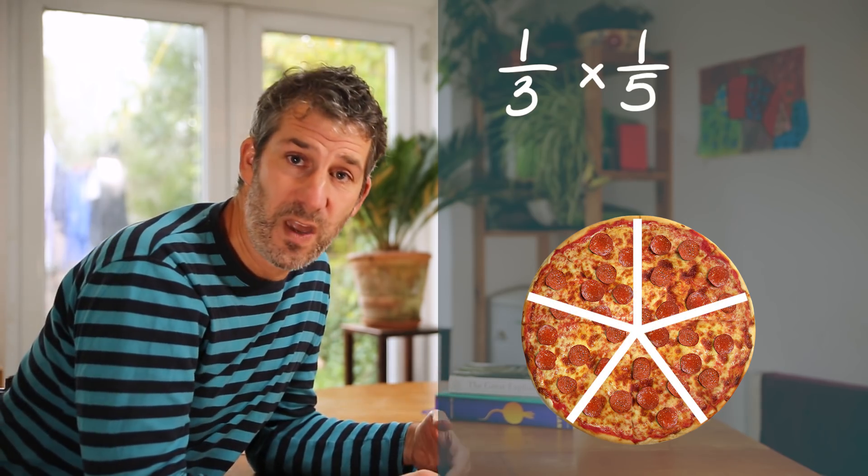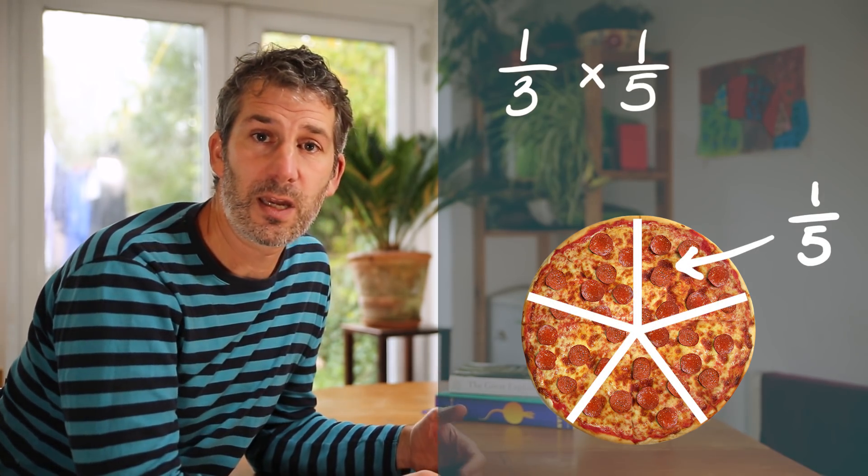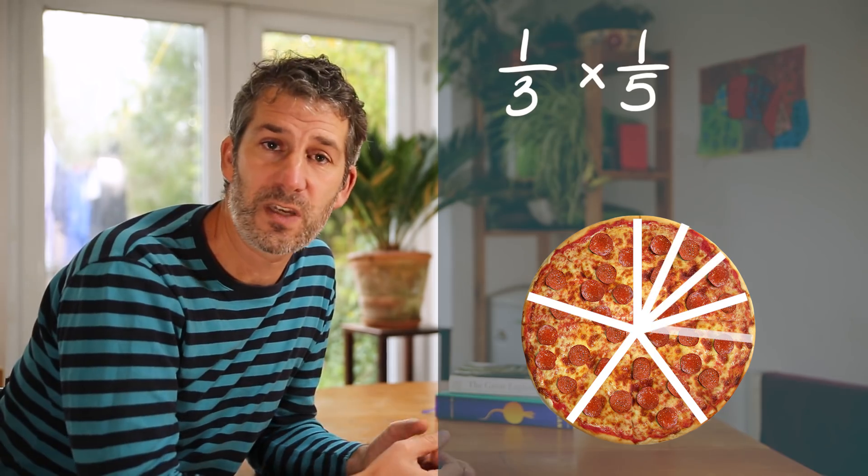How about one third times a fifth? Well we need to split each of those fifths into three. And if we do that we end up with fifteenths. So one third times one fifth is one fifteenth.